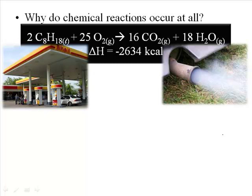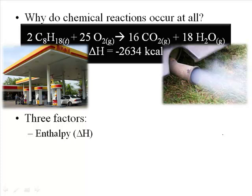Why can I heat up some raw eggs and make a wonderful omelet, but I can't cool the omelet back down and make raw eggs again? Those three factors are: first, the enthalpy — the heat that's either absorbed or released during the reaction. The second is something called entropy, which is a measure of disorder in the reaction. And the third is what's called activation energy — the energy required to actually activate or get a reaction going.